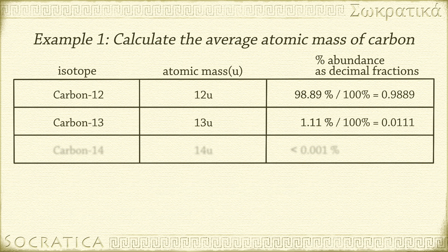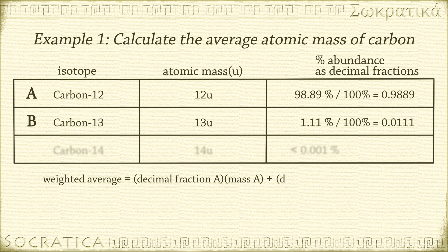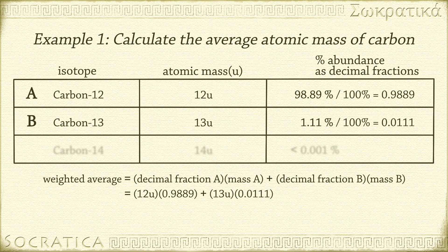There are two types of carbon we're worried about here. Let's call them A and B. A weighted average will be decimal fraction A times mass A plus decimal fraction B times mass B. That's 12 times 0.9889 plus 13 times 0.0111, which equals 12.0111,